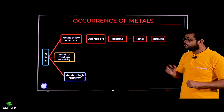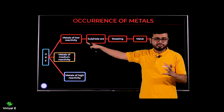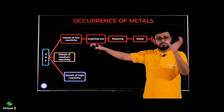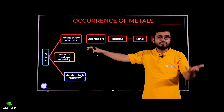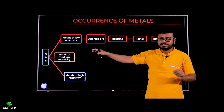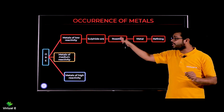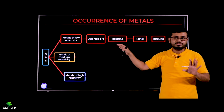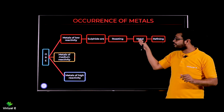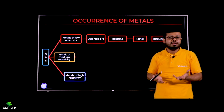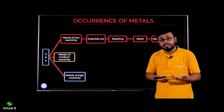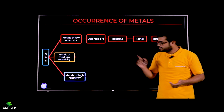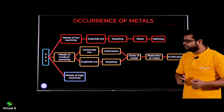For metals of low reactivity: first, there is a sulfide ore — the element forms a compound with sulfur. What you do is roast it — we will discuss this in detail. Then you get the metal, and finally refining: the metal you got may not be 100% pure, so you need to purify it further. That process is called refining.